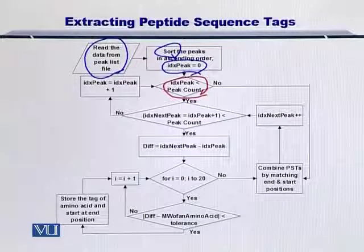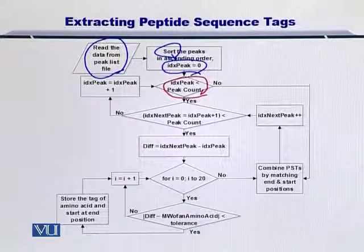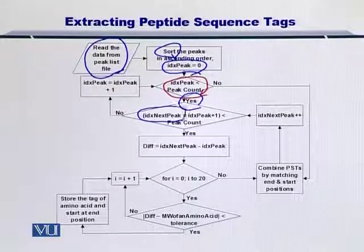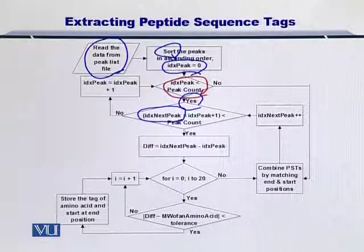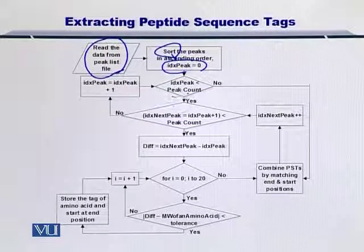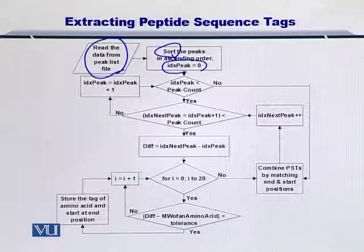So you check if your current peak index is less than the peak count — in other words, are you at the end of the peak list or not? If you are not at the end, then you define another variable: idx_next_peak, or index of the next peak. So you have three variables now with you: idx_peak or index of a peak, idx_next_peak or index of the next peak, and peak_count. Using these three variables, you can run the entire algorithm.